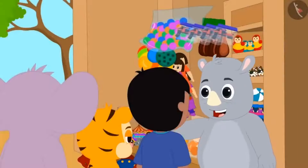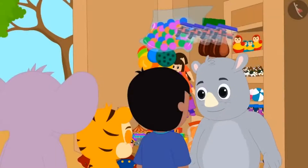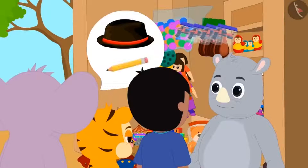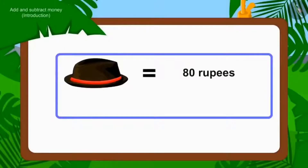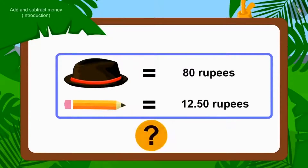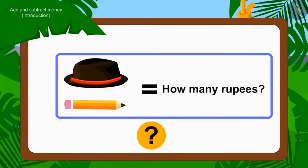All three friends have come to Gaggoo's toy store. They have to buy a hat and a pencil. The cap is Rs. 80 and the pencil is Rs. 12.50. Children, can you tell how much money will they have to pay to buy the gift?